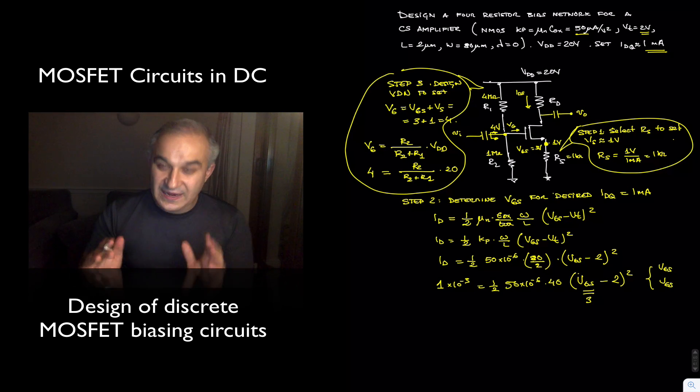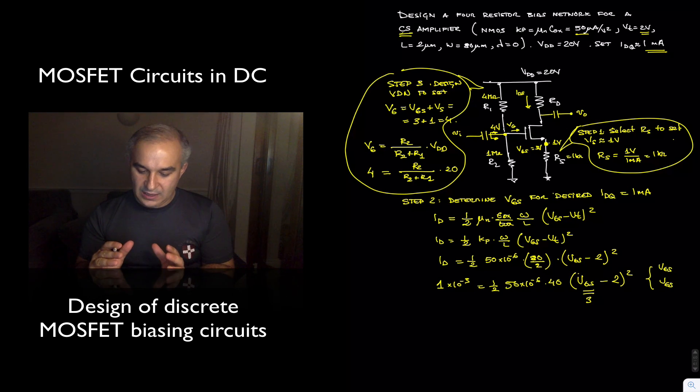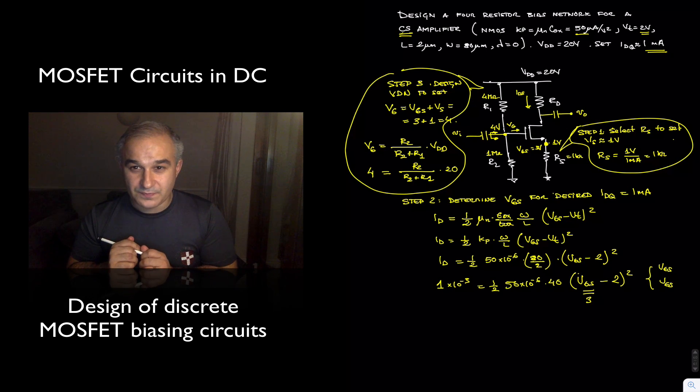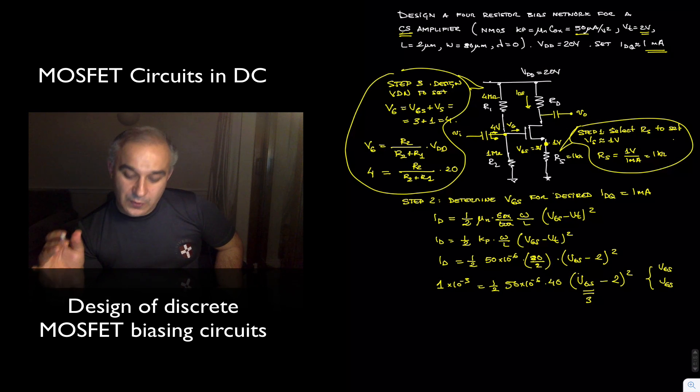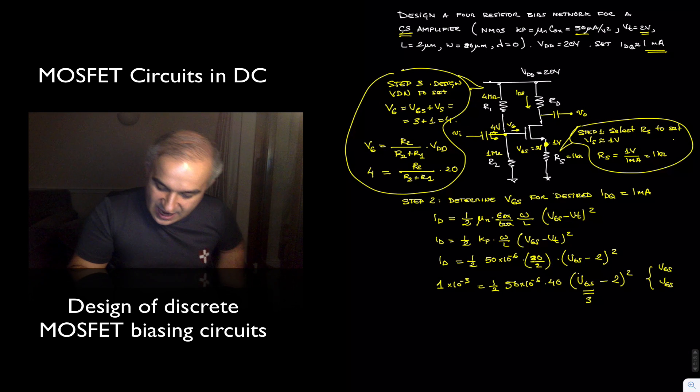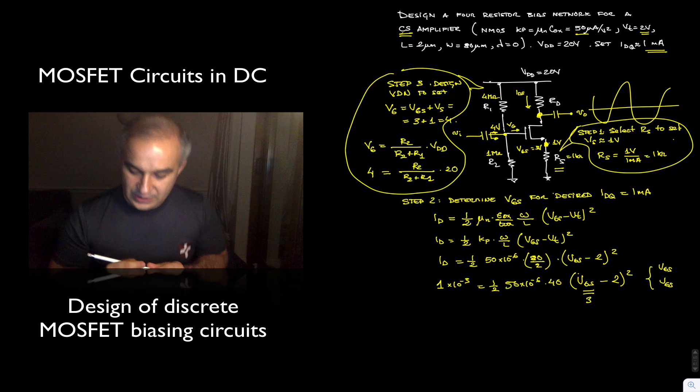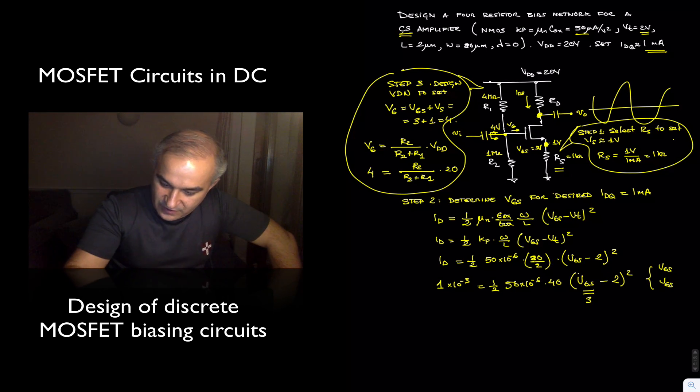Let's recap. So we are designing a discrete common source amplifier. And the first step is all DC, is the biasing network. We have a 4-resistor biasing network. What is the first step that we do? We select RS in order to set V_GS sufficiently low so that we maximize the swing at the drain terminal. So we can set it around 1 volt. So 1 volt for a 1 milli is just a 1k in the source.